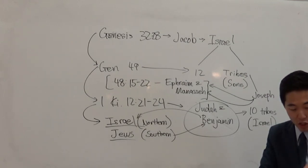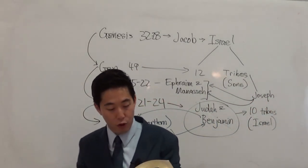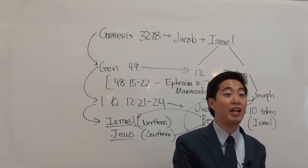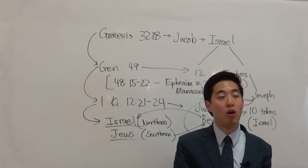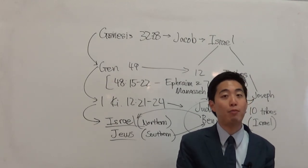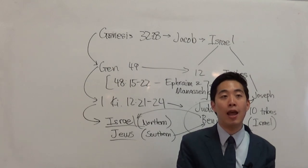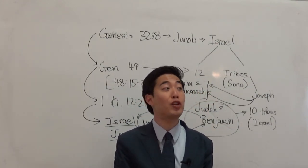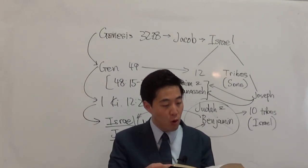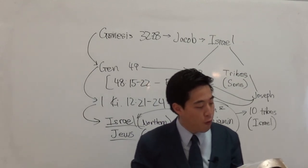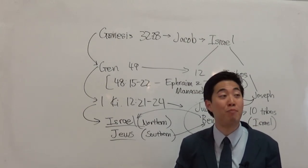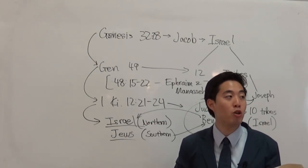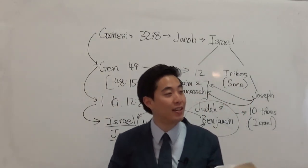Romans chapter 11 verse 1: Paul says, 'I also am an Israelite, of the seed of Abraham, of the tribe of Benjamin.' Romans 9 verse 3 goes further: Paul says he could wish himself accursed from Christ for his brethren, his kinsmen — not spiritually, but according to the flesh, who are Israelites.